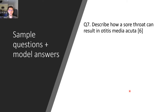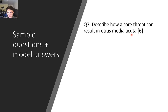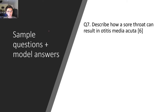Final question: how can a sore throat result in otitis media acuta? Otitis media acuta is an acute ear infection, very commonly occurring in children but also in adults. A sore throat, allergies, or any inflammation causes the tonsils to enlarge — they undergo hypertrophy. In the tubal tonsil, because it's wrapped around the opening to the auditory tube, enlargement narrows and occludes the tube.